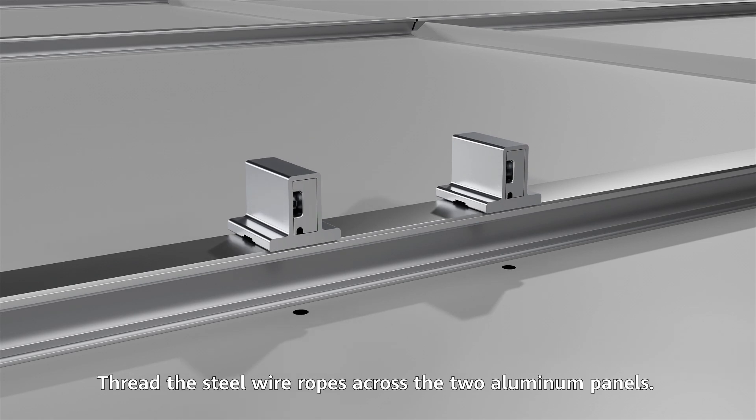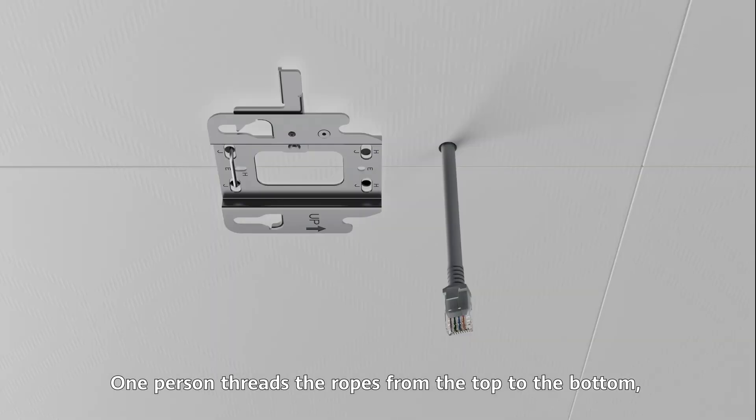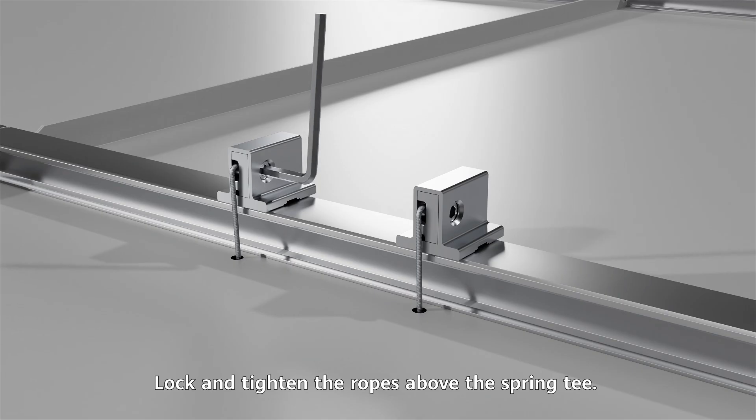Thread the steel wire ropes across the two aluminum panels. It is recommended that two persons do this together. One person threads the ropes from the top to the bottom, while the other threads them from the bottom to the top. Lock and tighten the ropes above the spring tee.